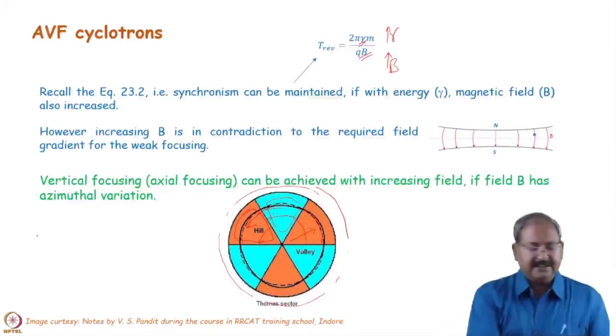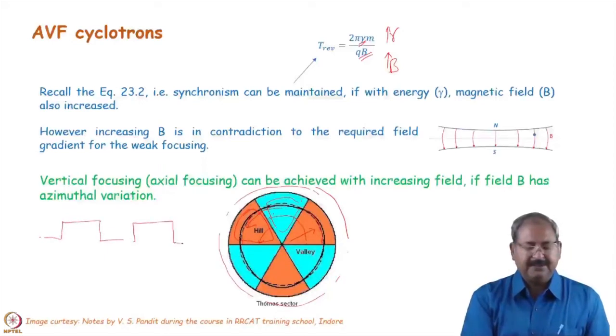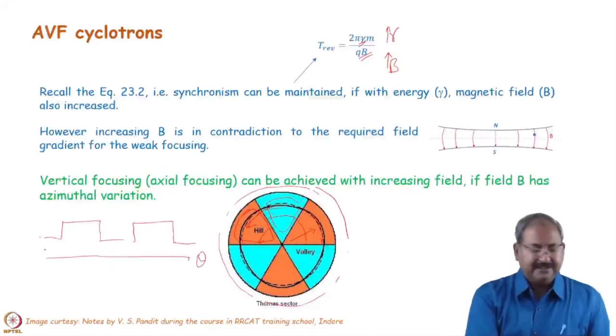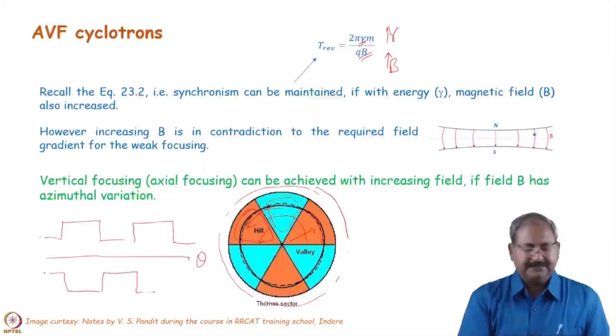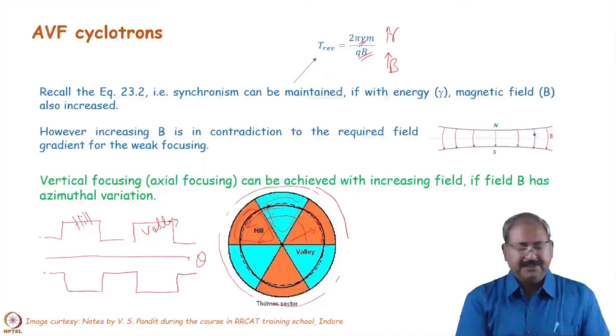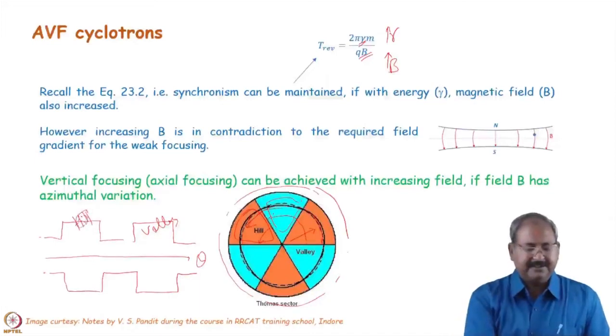How hills and valley looks like? So, if we will go around theta for a constant radius r, the pole gap will look like this. So, this is the valley. And this is the hill. So, here the magnetic field is stronger. Here, magnetic field is weaker.